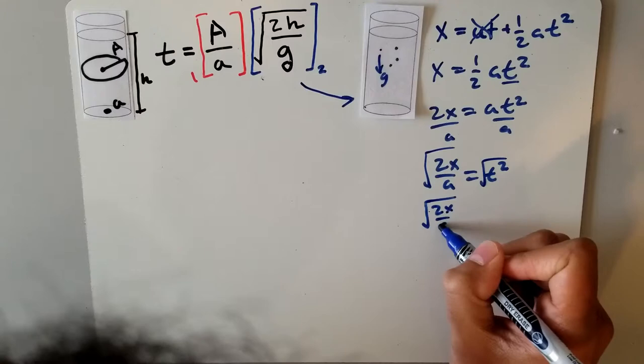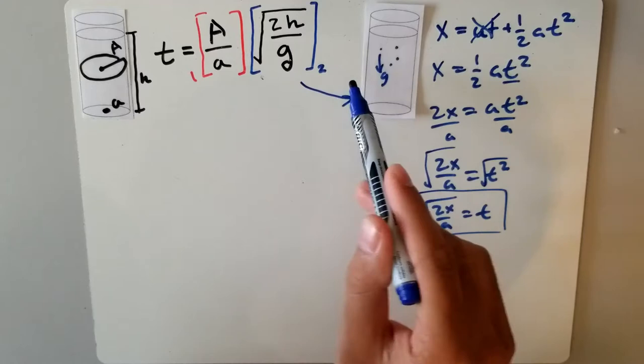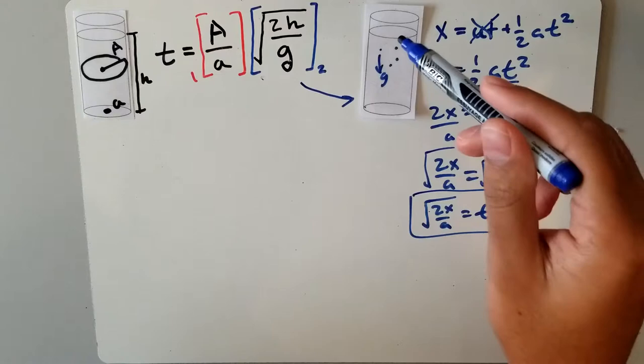Through the manipulation of this equation, we can see that the second part of the equation is just the amount of time it would take for a solid body to fall the distance of the height of the water above the hole.